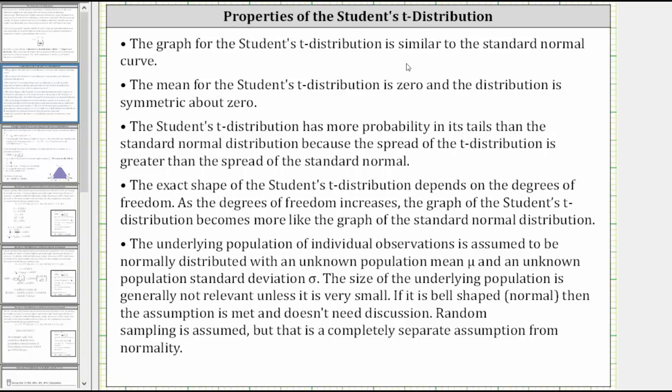The graph for the student's t-distribution is similar to the standard normal curve. The mean for the student's t-distribution is zero, and the distribution is symmetric about zero. The student's t-distribution has more probability in its tails than the standard normal distribution, because the spread of the t-distribution is greater than the spread of the standard normal distribution.